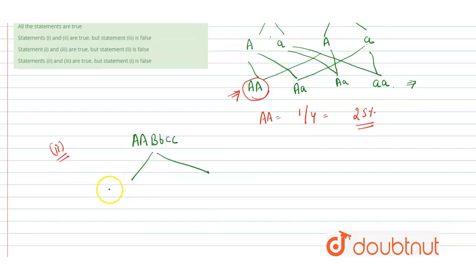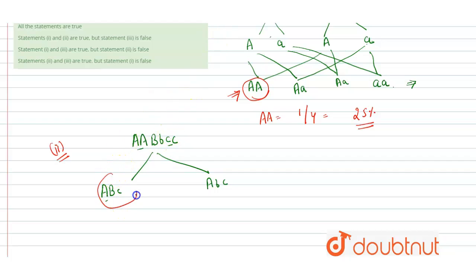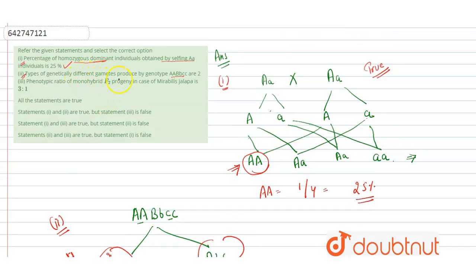For genotype AAbb, the gametes produced are: capital A capital b, and that is it — because capital A is in homozygous condition and small b is also in homozygous condition. So we get only two types of gametes: Ab and Ab. The number of gametes would be more, but the types of genetically different gametes are only two. So this statement is also correct and true.